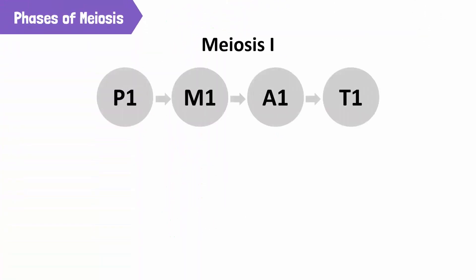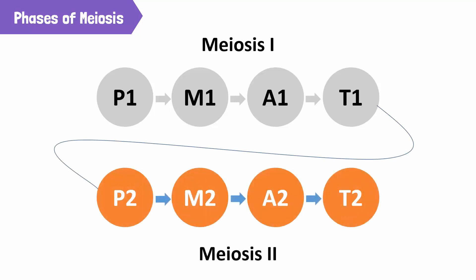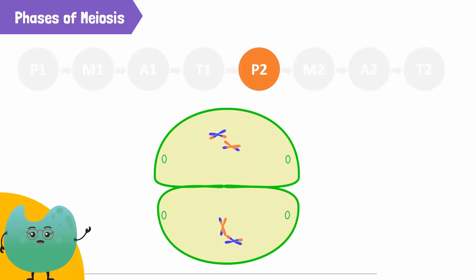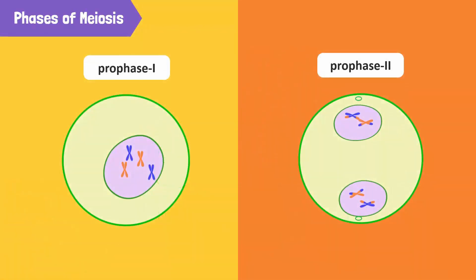These cells will now undergo meiosis II through another PMAT. In prophase II, the chromosomes condense again in each of the two daughter cells. The nuclear membrane disappears and the spindle fibers form. The major difference between prophase II and prophase I is that the daughter cells only have one copy of the homologous chromosome, so in prophase II there is no crossing over.